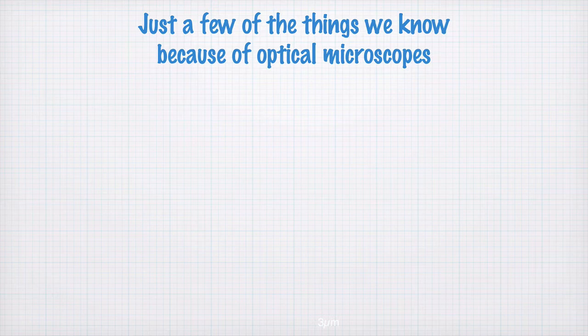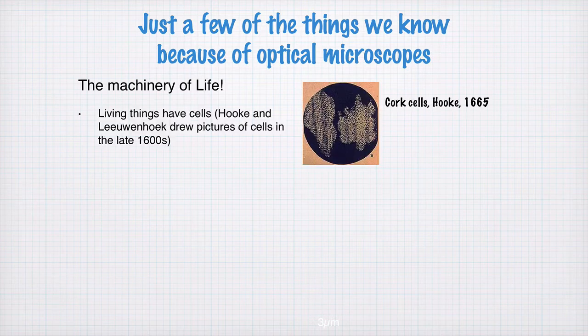Just a bit of motivation before we start: here are a few of the things we know because of optical microscopes. We've seen the machinery of life — as early as 1665, there were photos of cells, in this case the cells in cork, taken by Robert Hooke.